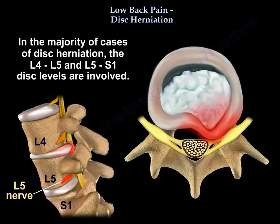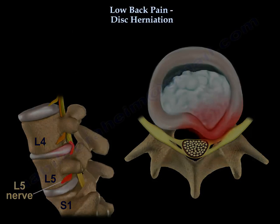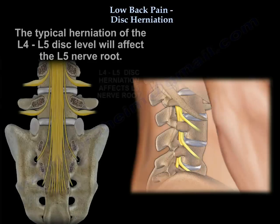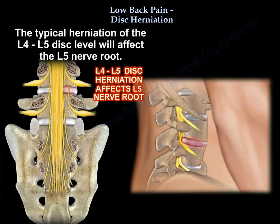A lumbar or lumbosacral disc herniation could affect the nerve roots. In the majority of cases of disc herniation, the L4-L5 and L5-S1 disc levels are involved. A typical herniation of the L4-L5 disc will affect the L5 nerve root.